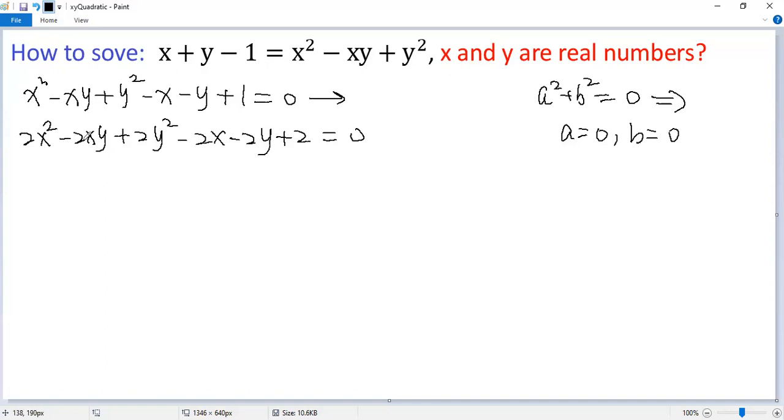We know x squared minus two xy plus y squared is a perfect square. So we break this one to two terms. So x squared plus x squared minus two xy plus y squared plus y squared minus two x minus two y plus, again, one plus one equals zero.